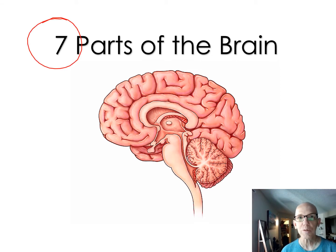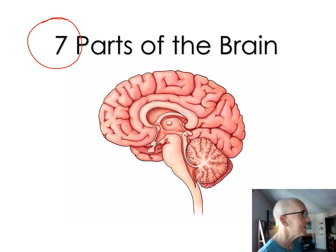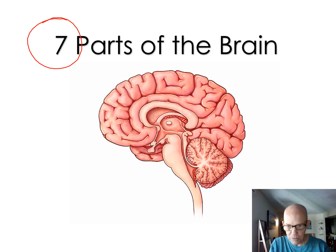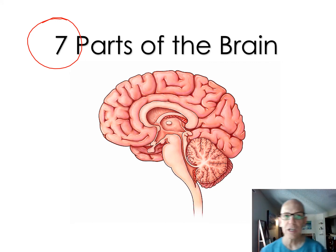So here are the seven parts of the brain. This is the sagittal view — it's like a side view, as if I took the brain out of my head and cut it right down the middle and just looked at it from the side. This is the front part of the brain, and this is the back half.